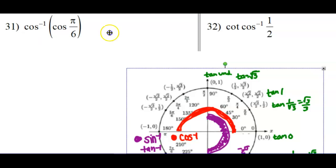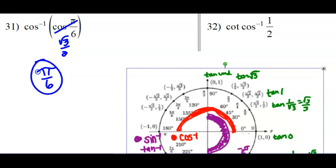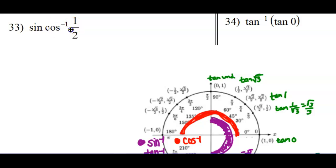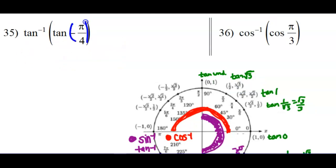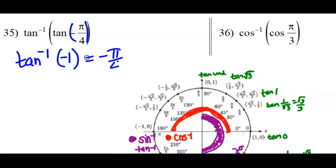Cosine at pi over 6 is square root of 3 over 2, and then it says where is the cosine of square root of 3 over 2? We're in quadrant 1, so it's just going to be at pi over 6. These are not the same function — where is the cosine of 1 half? That happens here at pi over 3. But then it's asking what is the sine at pi over 3, and that would be the y value of square root of 3 over 2. Going to negative pi over 4, the tangent at that spot is indeed negative 1, and where is the tangent of negative 1? Indeed negative pi over 4.